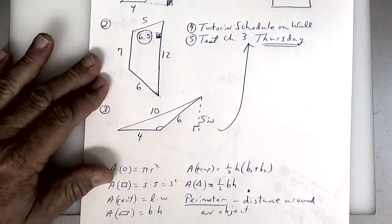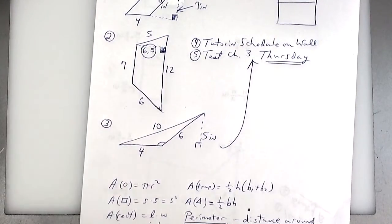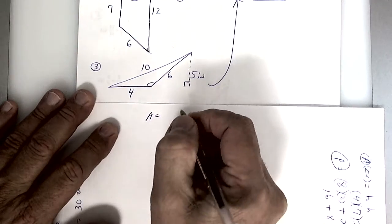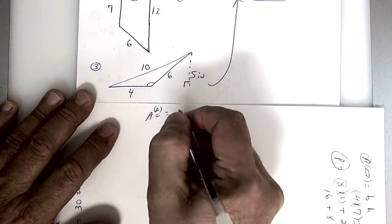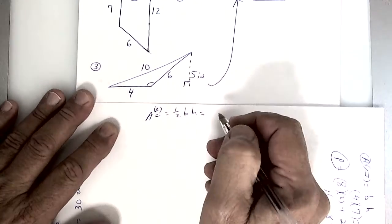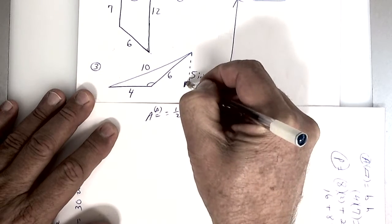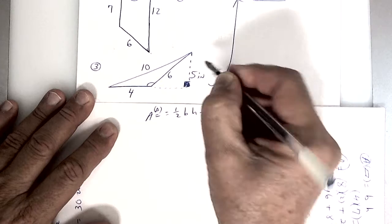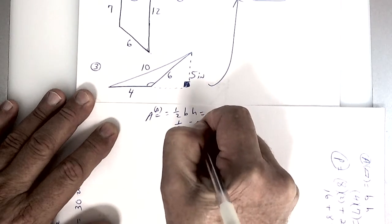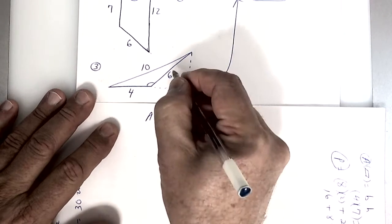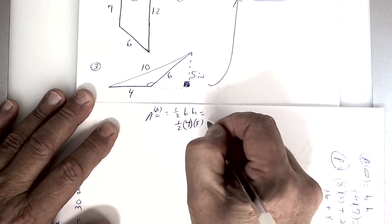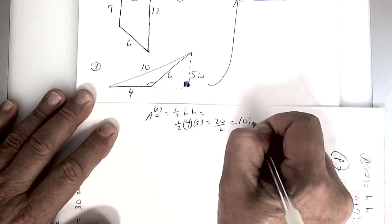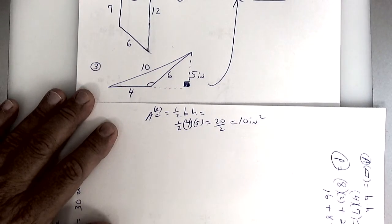The next one is an obtuse triangle. To do an obtuse triangle, the area of the triangle is going to be 1 half the base times the height. Color your box in. I want to see those boxes colored. So one of these is your height and one's your base. Your height is 5 and your base is going to be 4. So 4 times 5 is 20 and then half of 20 is 10 square inches.